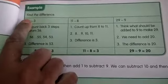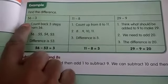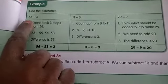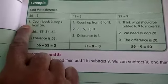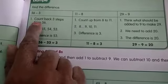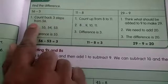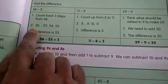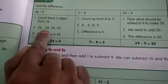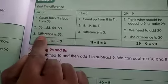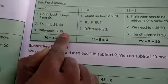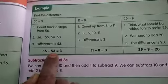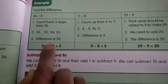Example children, find the difference. So 56 minus 3. Here what he told? Count back 3 steps from 56. So we are counting how many steps? 3 steps children. 56 means 55, 54, 53. So difference is 53. So 56 minus 53 is 3 children.